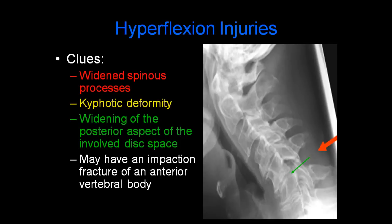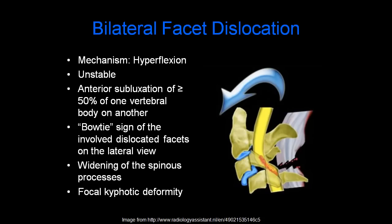Hyperflexion injuries are common, especially with motor vehicle accidents. Clues include widened spinous processes — visible on the radiograph with the red arrow — kyphotic deformity shown with the yellow lines, and widening of the posterior aspect of the involved disc space shown with the green line. There may be an associated impaction fracture of an anterior vertebral body. Bilateral facet dislocation occurs with hyperflexion and is an unstable injury, associated with anterior subluxation of greater than 50% of one vertebral body on another. We see the bow tie sign of the involved dislocated facets on the lateral view, as well as widening of the spinous processes and a focal kyphotic deformity.